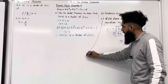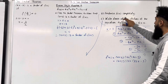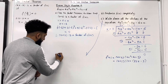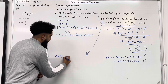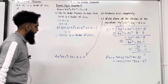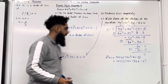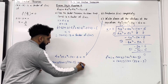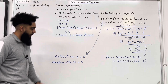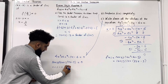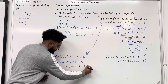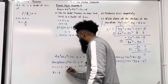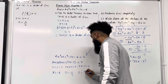Let's look at Part C. We want to write down all the solutions of 4x³ + 4x² − 11x − 6 = 0. The factorization of this cubic is (x + 2)(2x + 1)(2x − 3) = 0. Setting each bracket equal to 0 and solving for x: x = −2, x = −1/2, and x = 3/2.